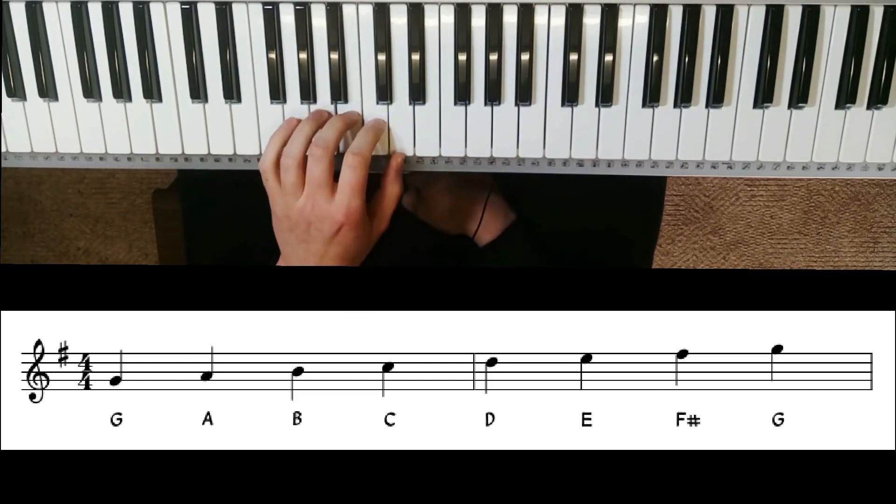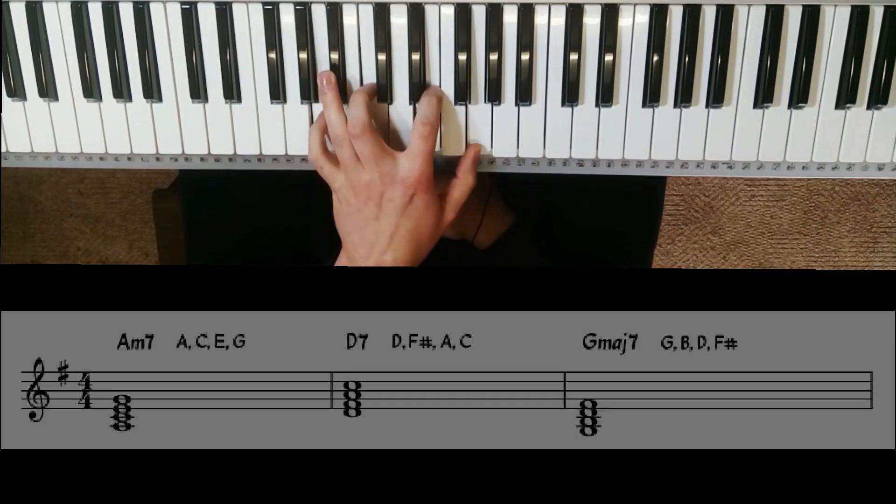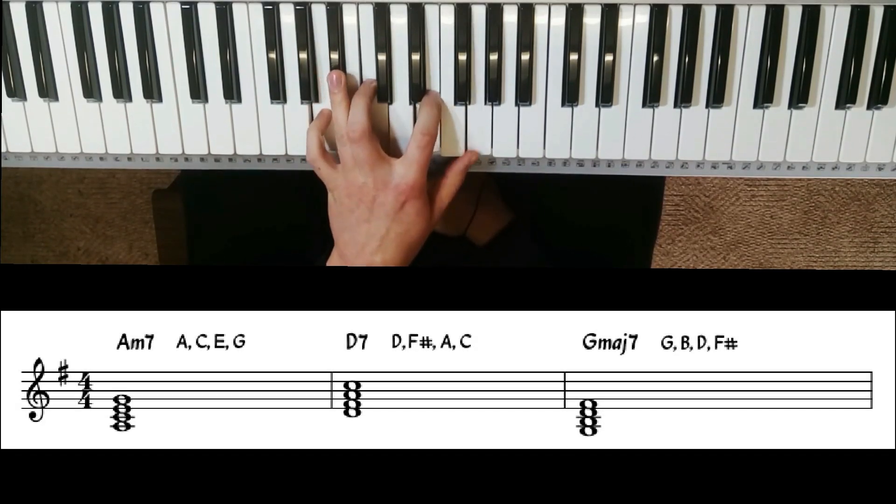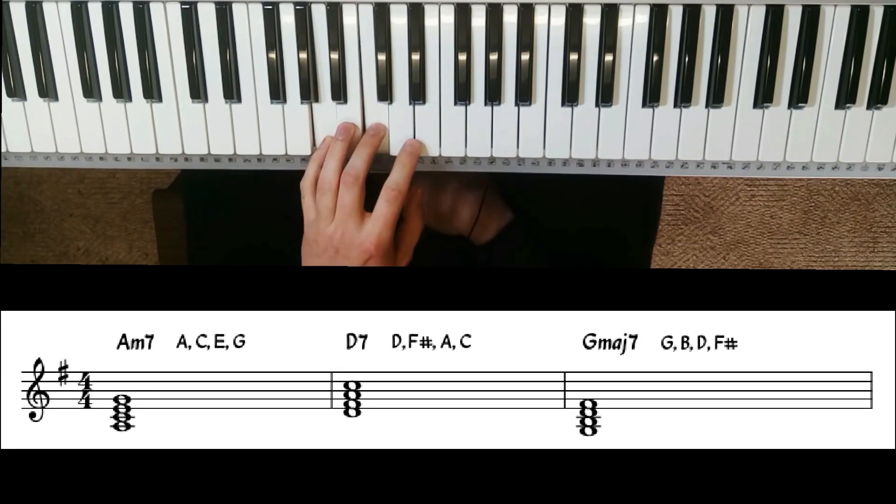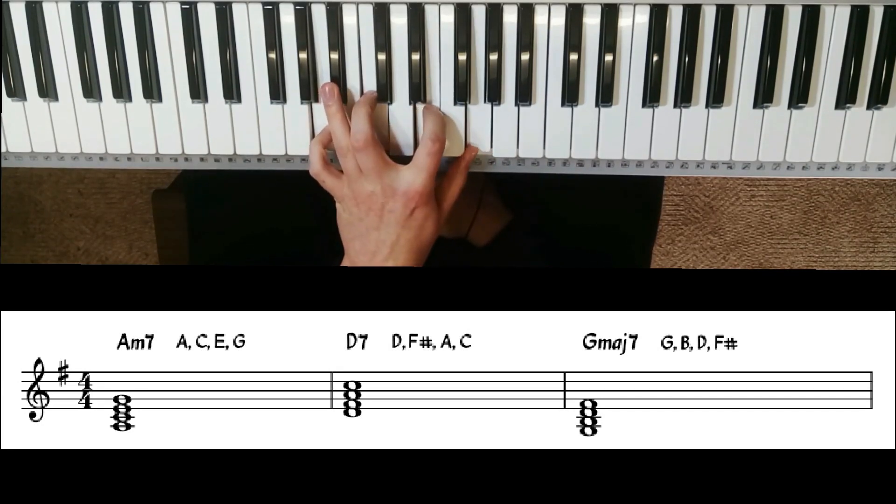For our 2-5-1, counting 1, 2, 3, 4, 5, we'll play the second note. This makes our A minor 7 chord. It's the same concept from the first lesson—we play every other white note.